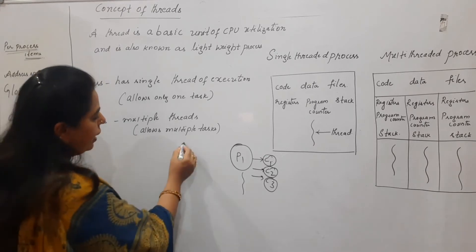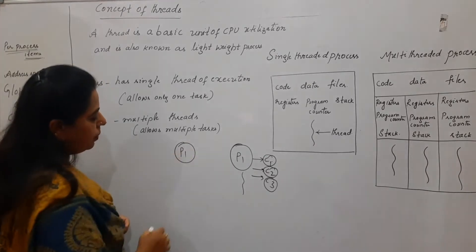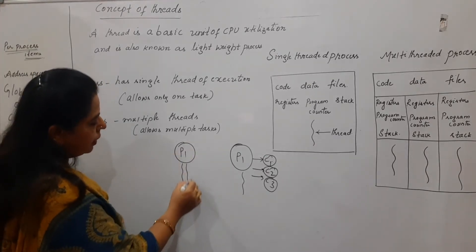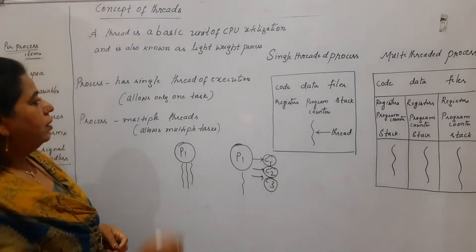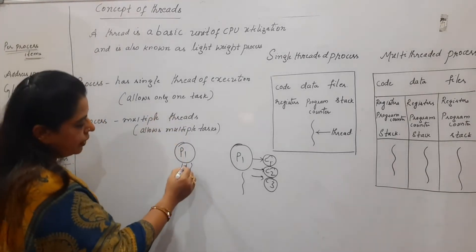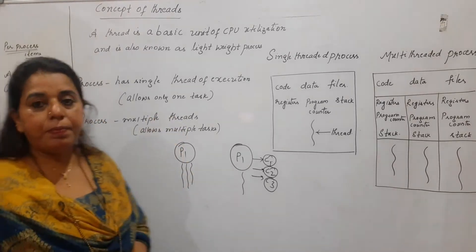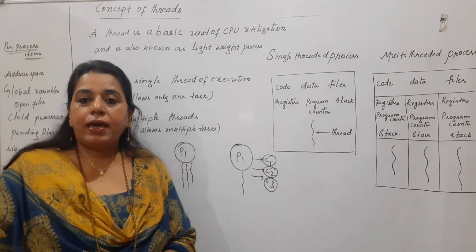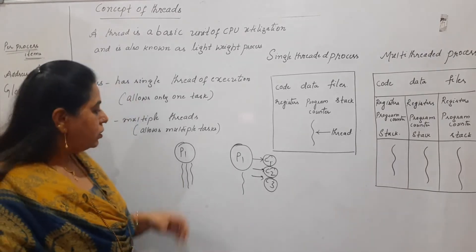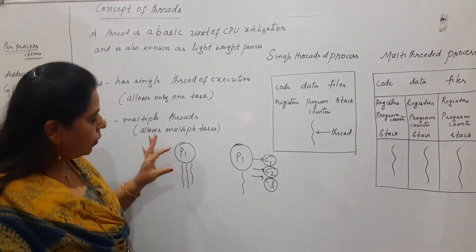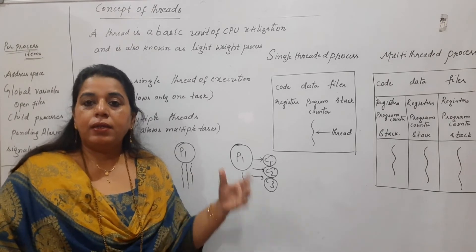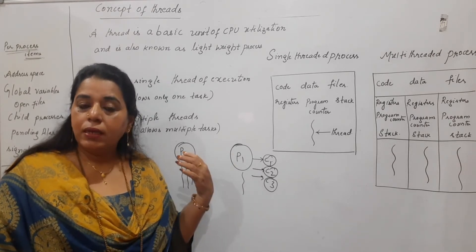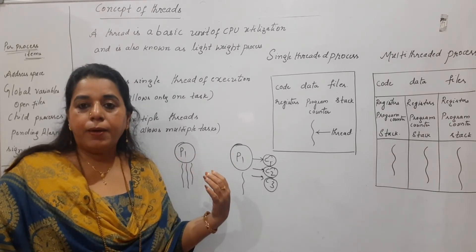So for that I can say: process P1, let us assume it has got three threads of execution. That means three multiple tasks can be done at the same time. So to carry out multiple tasks, the concept of thread is definitely needed here.